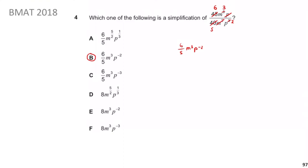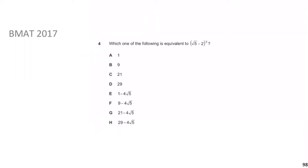Previously we were looking at BMAT 2018 question 4, where we figured out the correct answer was B — hopefully that was pretty straightforward. Now we move on to BMAT 2017 question 4, which asks: which of the following is equivalent to that equation? Pause the video, be sure to be back after a minute — we'll go through the solution.